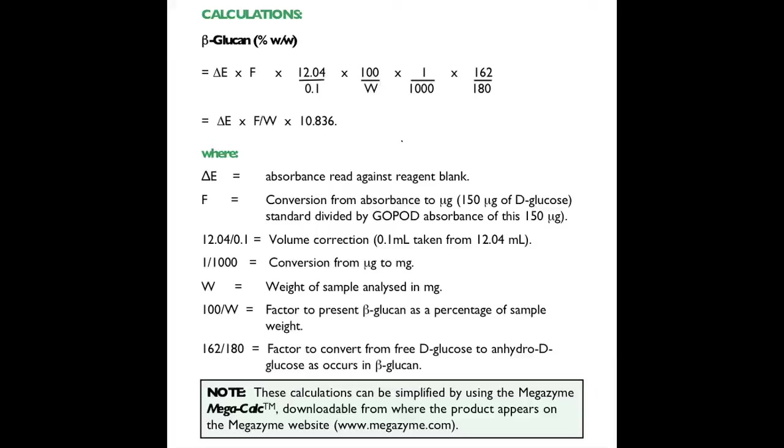W is the weight of the sample analyzed in milligrams. 100 over W is a factor to convert the beta-glucan to a percentage of sample weight. 162 over 180 is a factor to convert from free glucose to anhydro-D-glucose as it occurs in beta-glucan.